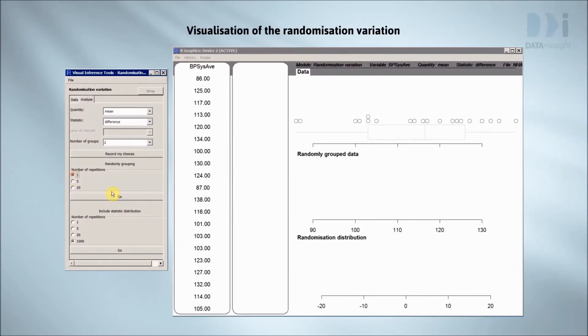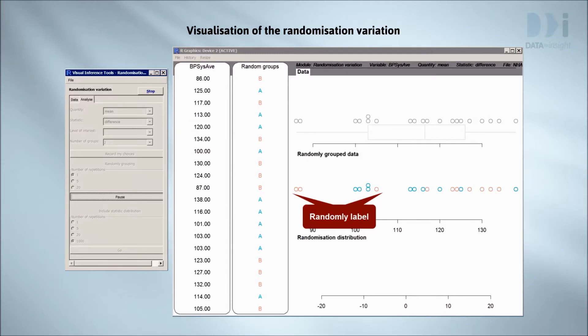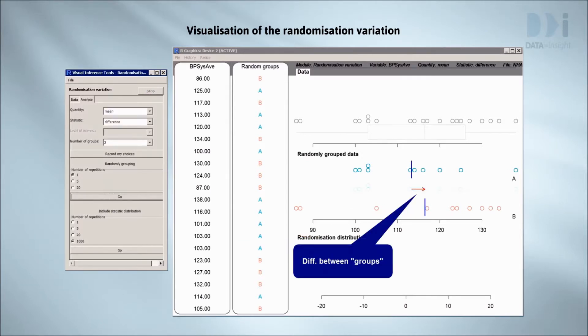Here are the systolic blood pressures of 20 people in the NHANES dataset. I'm pulling a copy of the points down into the middle panel. Now I've randomly labelled and coloured half of them as belonging to group A and half as belonging to group B. Now I've pulled them apart into two artificial groups, marked the position of the mean blood pressure of each group, and I've shown the differences between these two means with a red arrow. The B group mean is bigger than the A group mean by about three units.